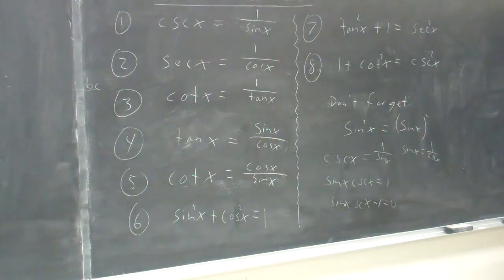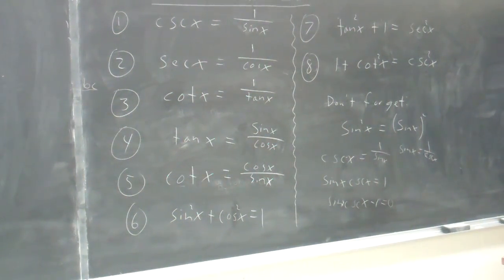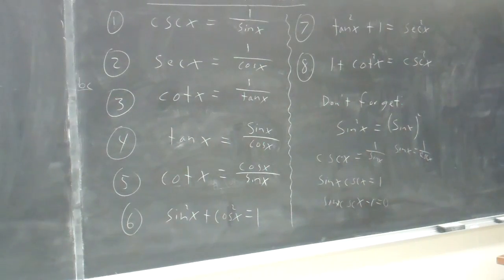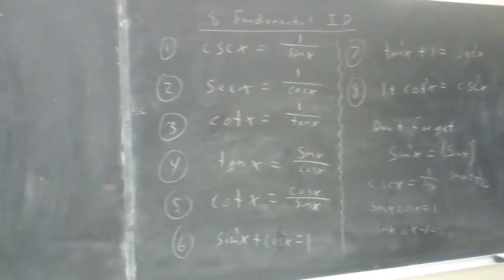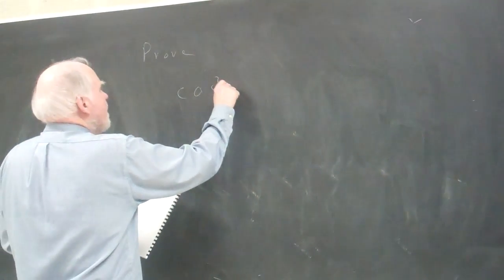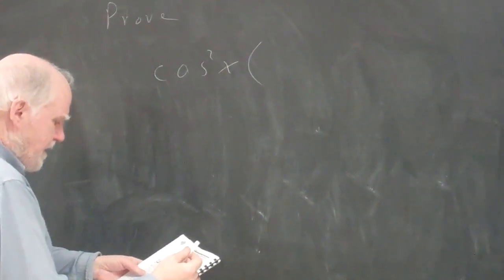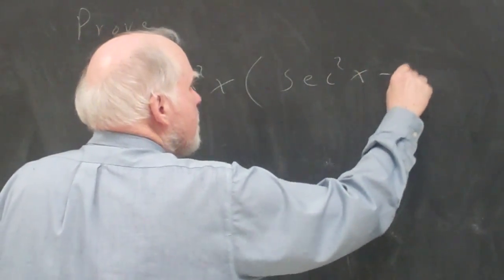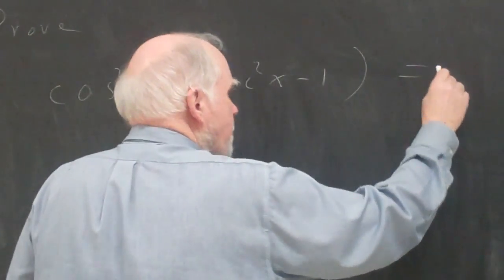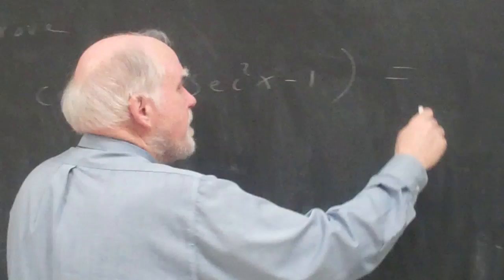All right, let's try another one. How about, let's see. Okay, cosine squared x times secant squared x minus 1, and this equals, supposed to equal sine squared x.